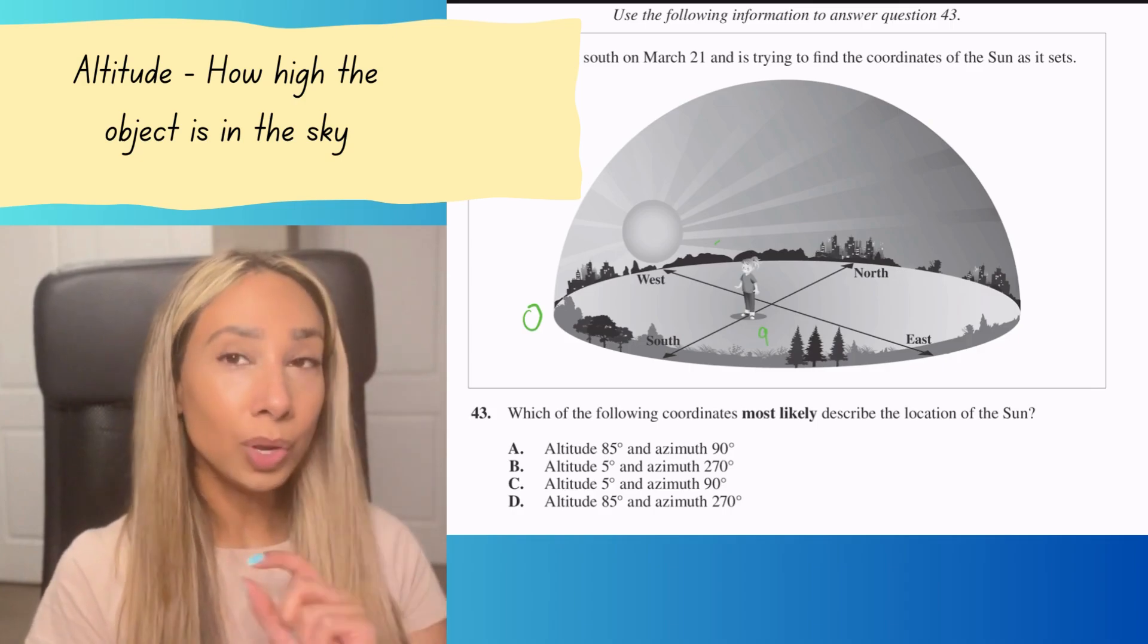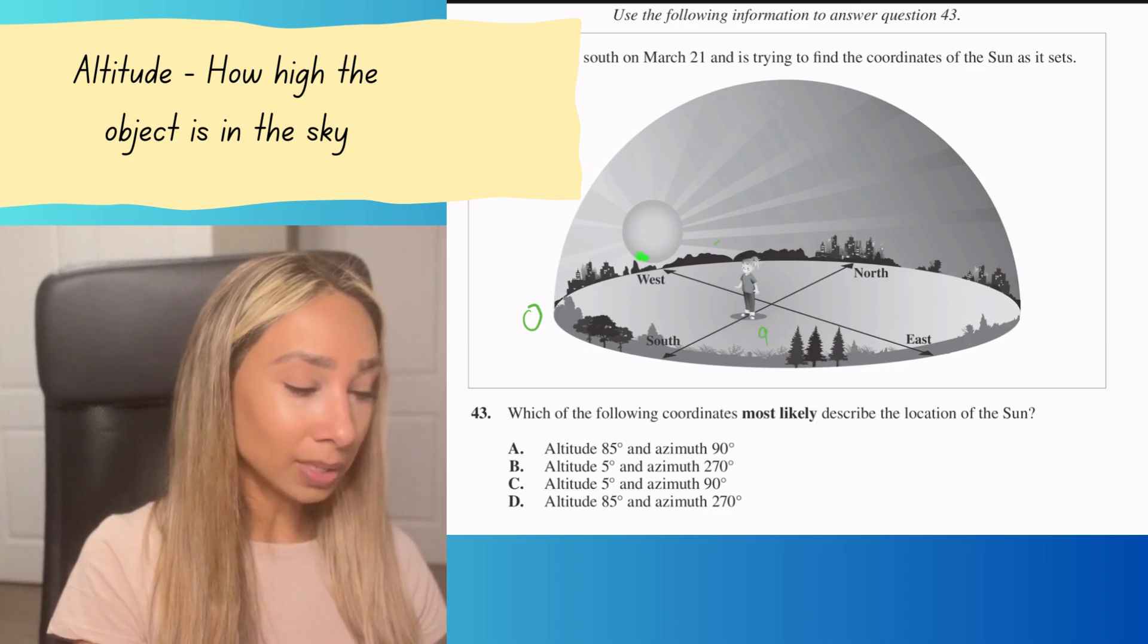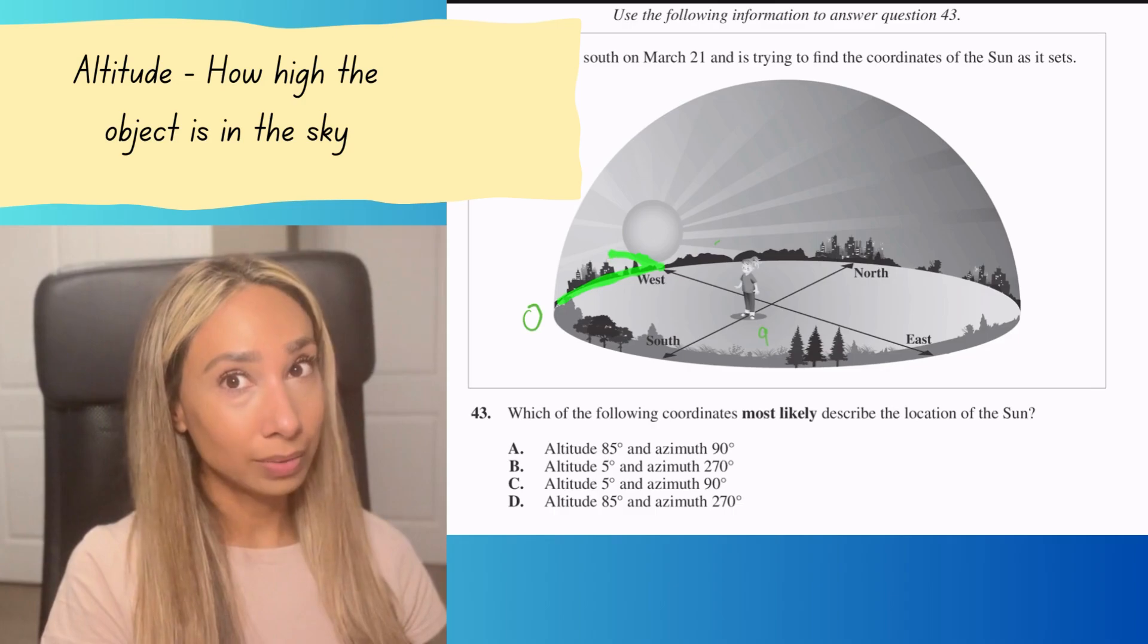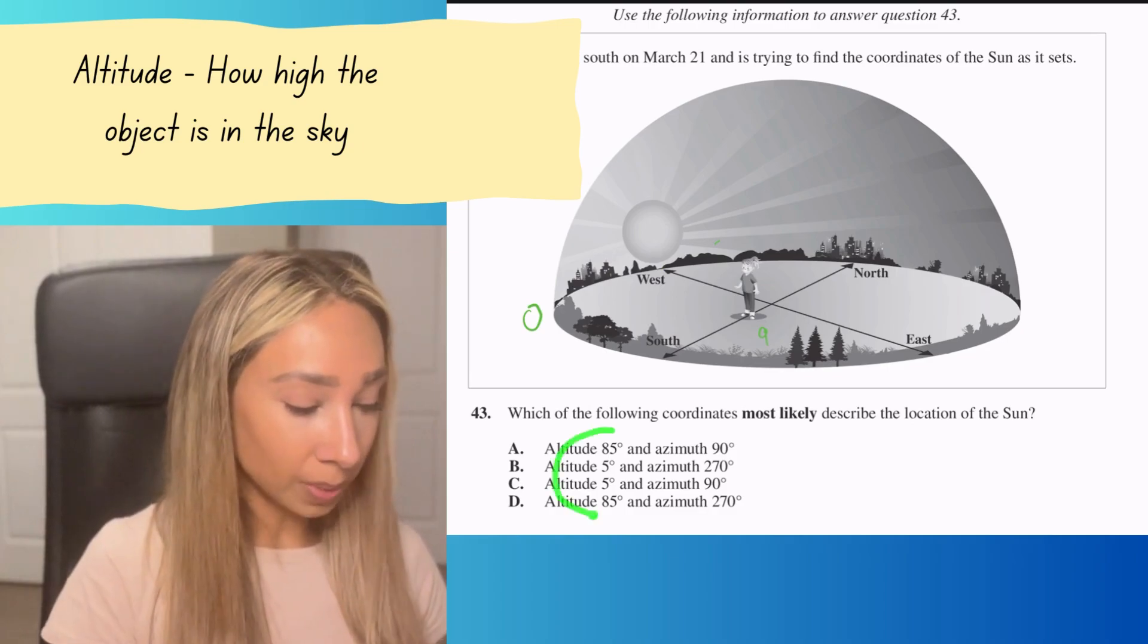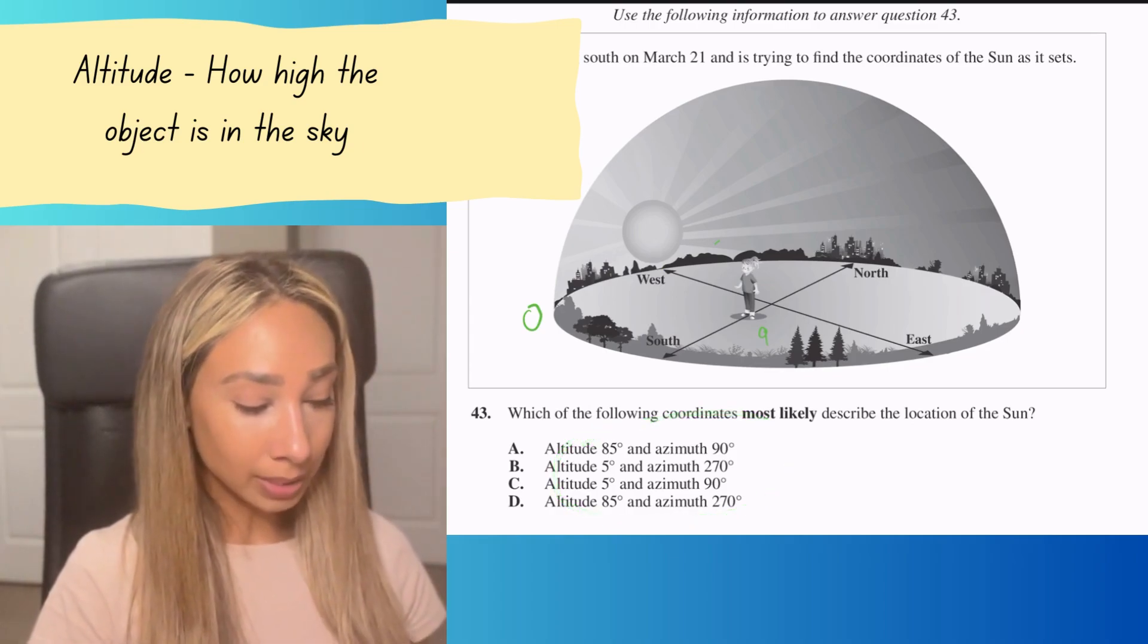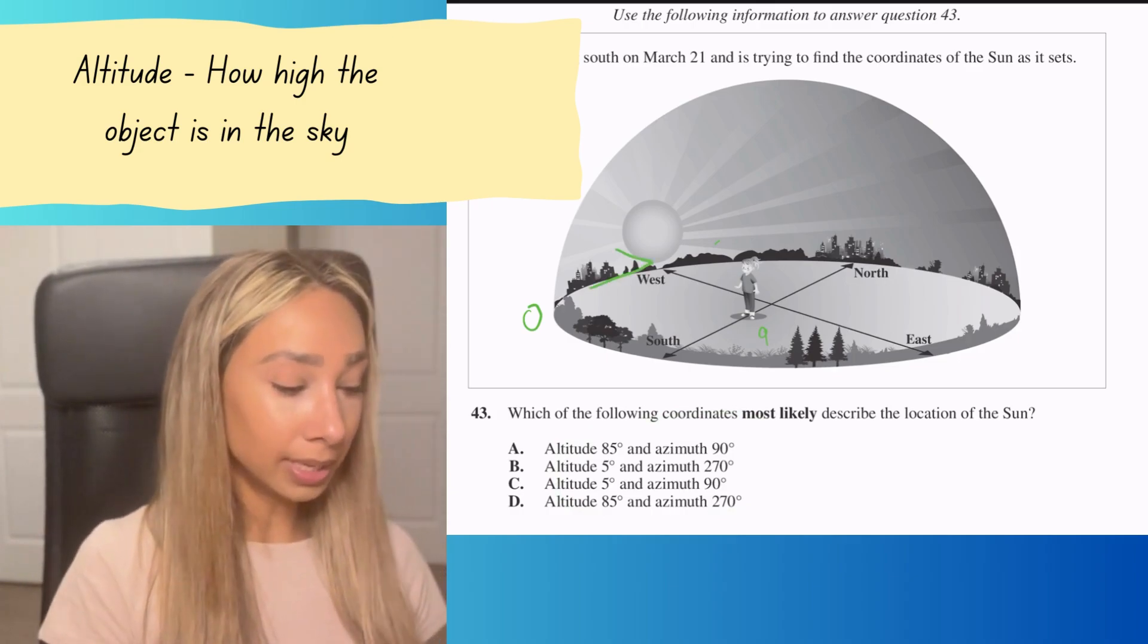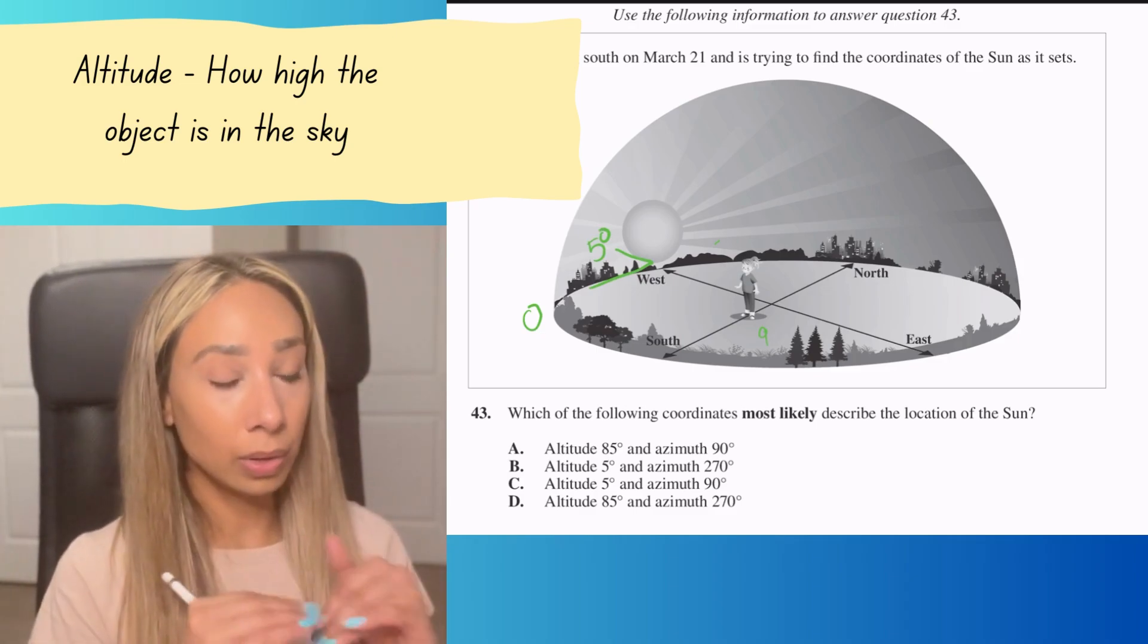We know it's sunset, so it's close to the horizon. That tells me this number is going to be pretty small. Looking at our options, the smallest number I have is 5 degrees, so I'll say this is 5 degrees since we're hitting sunset—it's close to that horizon.